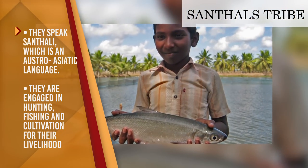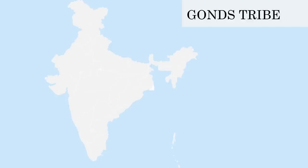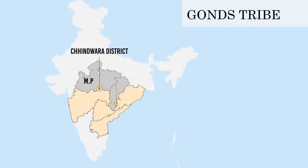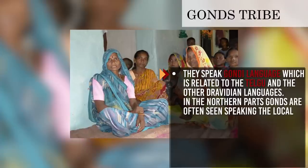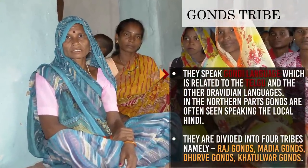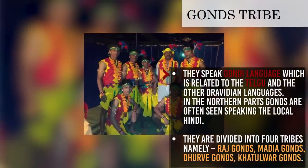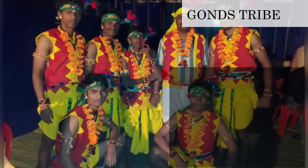The Santhals are engaged in hunting, fishing and cultivation for their livelihood. Gons Tribe: they are widely spread in the Chhindwara district of Madhya Pradesh, Bastar district of Chhattisgarh and also in parts of Maharashtra, Andhra Pradesh and Orissa. They speak Gondi language, which is related to Telugu and other Dravidian languages. In the northern parts, Gons are often seen speaking local Hindi. They are divided into four main tribes: Raj Gons, Mardiya Gons, Dhruwe Gons and Kathualwar Gons.